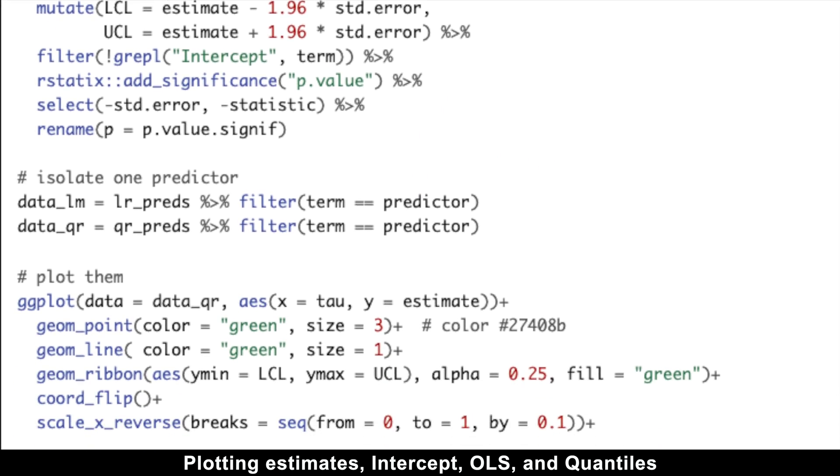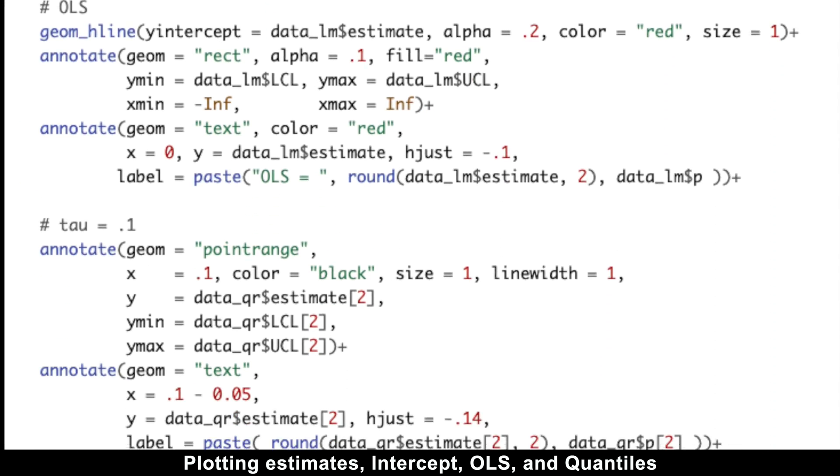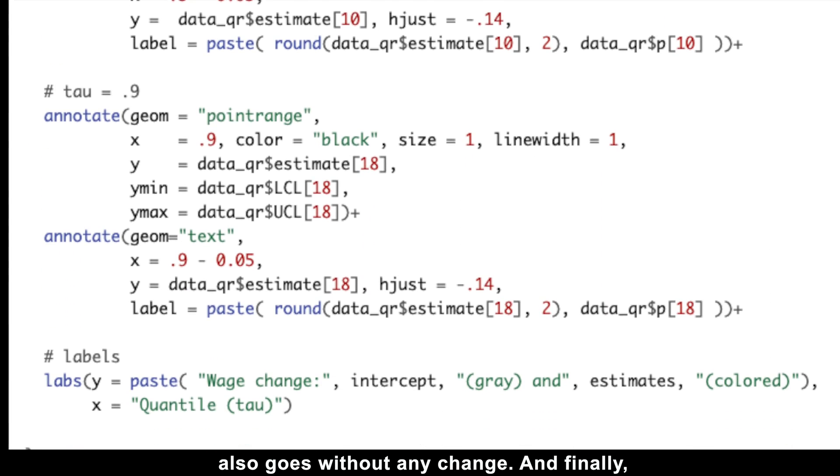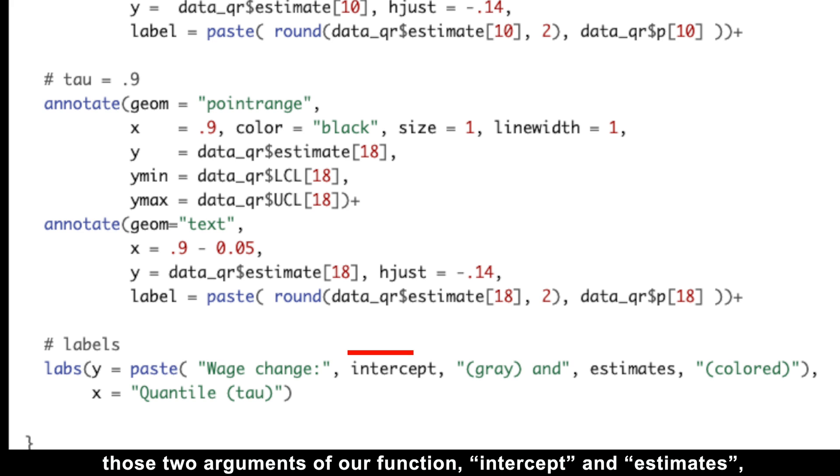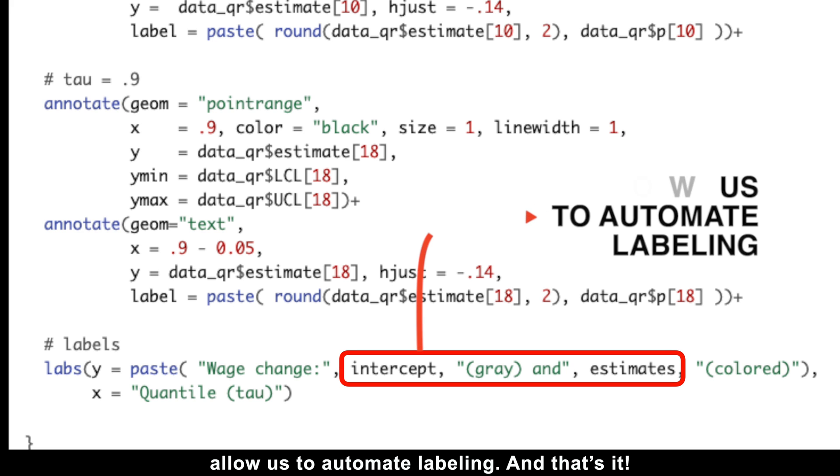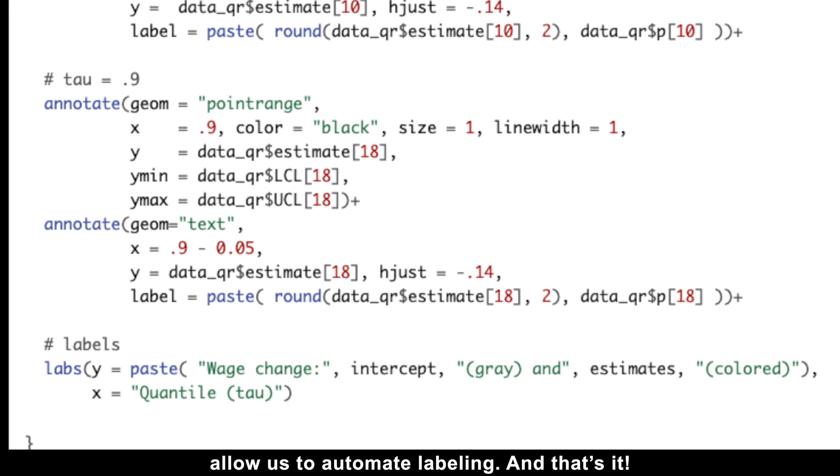Plotting estimates, intercept, linear model, and quantiles also goes without any change. And finally, those two arguments of our function, intercept and estimates, allow us to automate labeling. And that's it.